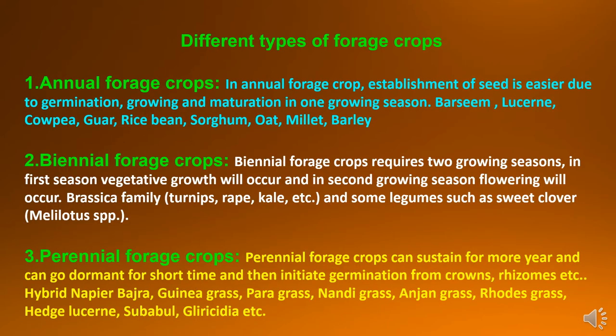Now the types of forage crops on the basis of life cycle. First one is annual forage crops. In annual forage crops, establishment of seed is easier due to germination, growing and maturation in one growing season. Crops like barseem, lucerne, cowpea, guar, rice bean, sorghum, oat, millet and barley are coming under annual forage crops.